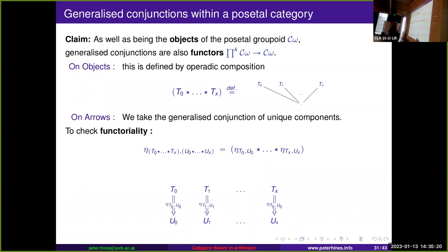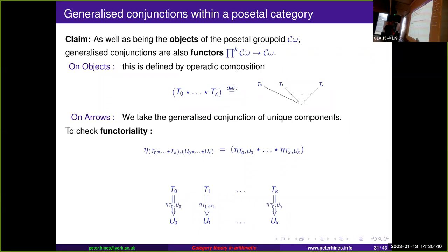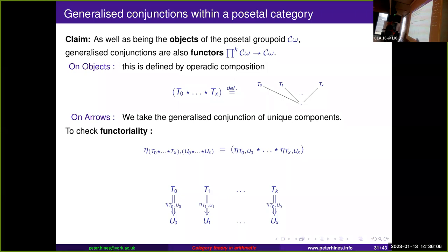The nice thing about posetal categories is that all diagrams commute. Next question: can we define tensors or generalizations? Yes, we can define a posetal tensor from it. Each generalized conjunction is a functor on this category: the generalized conjunction of a bunch of trees is obtained by plugging one of them onto each leaf of the tree in order. Functoriality holds because the generalized conjunction of the components of natural transformations gives the unique components of the natural transformation through the generalized conjunctions. So we have a posetal category with a series of functors indexed by the natural numbers.